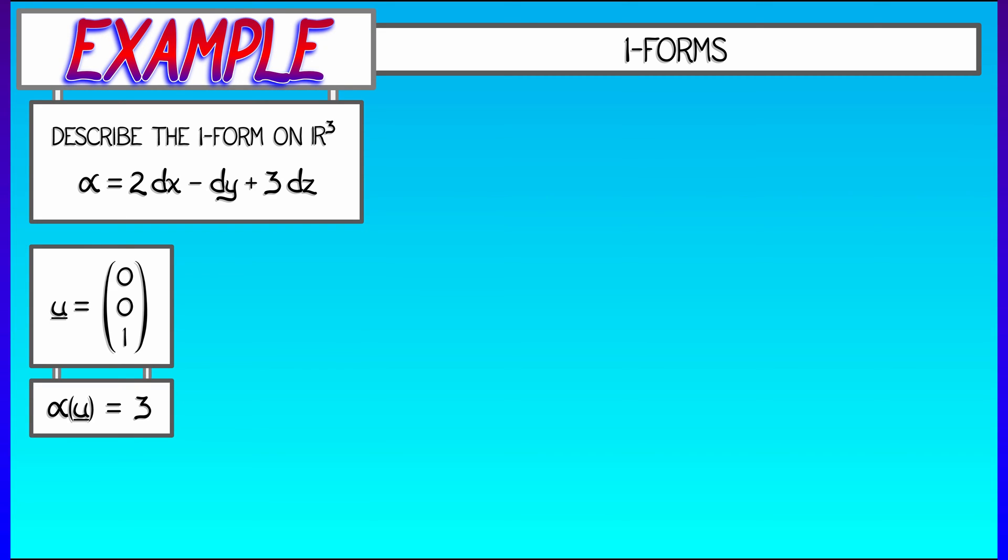what is the scalar that this outputs? The natural thing is to take 2 times the x component minus 1 times the y component plus 3 times the z component. That's 0 plus 0 plus 3. Alpha of u is 3.